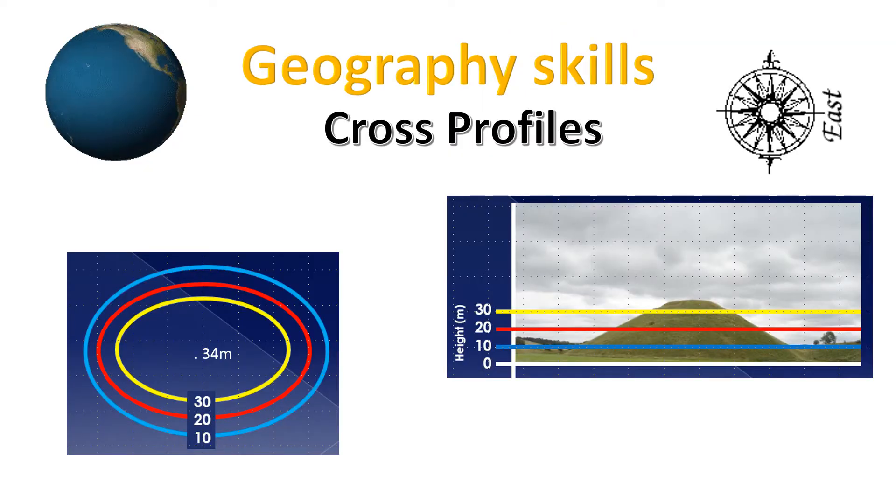On the left we can see a basic map showing three separate lines from 10 to 30. Each colored line is a contour line which shows equal height along that line. To the right of the screen we can see what these contours would look like for real. It shows a small hill, 34 meters high.